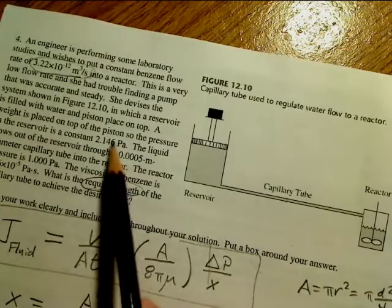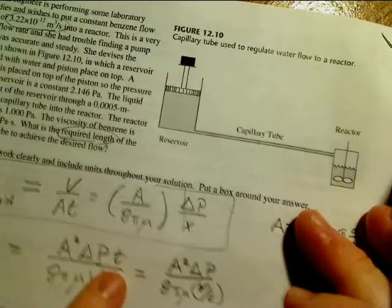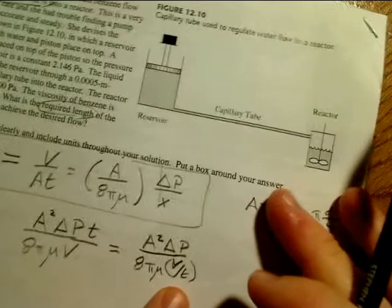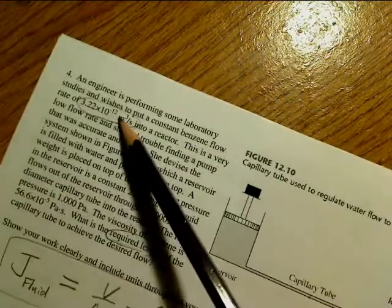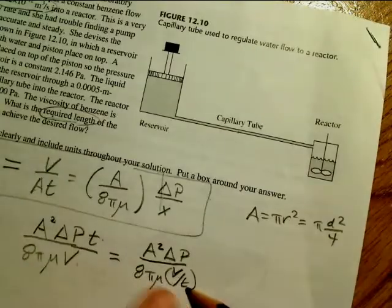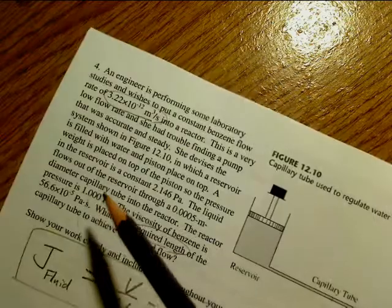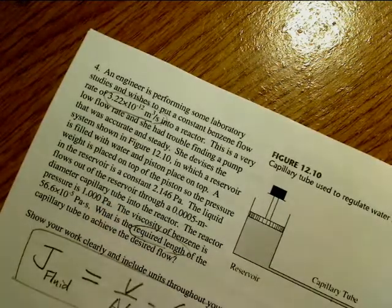change in pressure is the difference between those two, and V over T is given up here. It's going to go in parentheses, and mu is right there. That's the viscosity of benzene. Hope this helps.